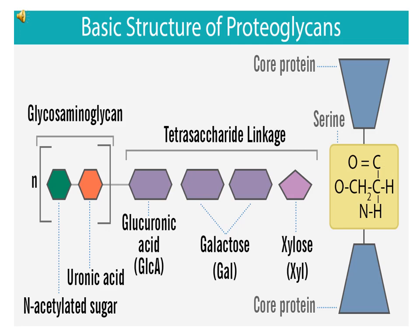The basic structure of proteoglycans starts from the left side: glycosaminoglycans combined with glucuronic acid (GLCA), also combined with two molecules of galactose (GAL), then combined with xylose, and then attached to the serine protein. All these molecules combine to form the basic structure of proteoglycans.